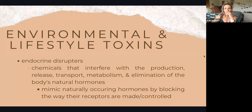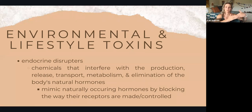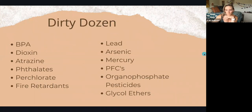Environmental and lifestyle toxins — endocrine disruptors. What exactly is an endocrine disruptor? They're chemicals that interfere with your hormones — the release, transport, metabolism, and elimination of hormones. Each endocrine disruptor is different; they don't all affect your hormones in the same way. But they all affect hormones — they mimic naturally occurring hormones and can block or interfere with receptors, or with how hormones are made or released.